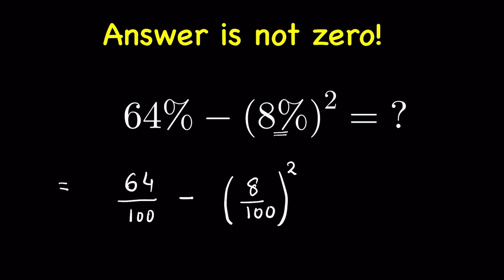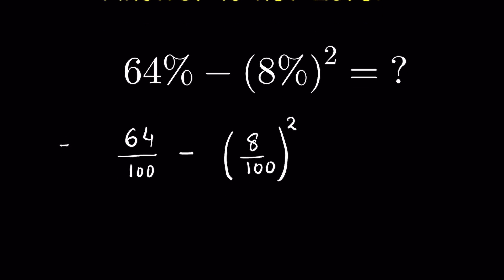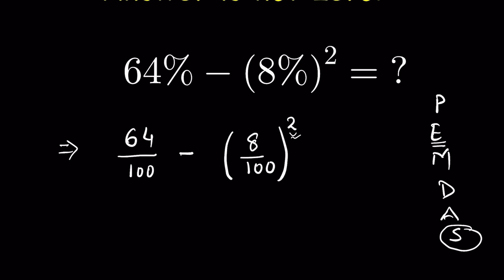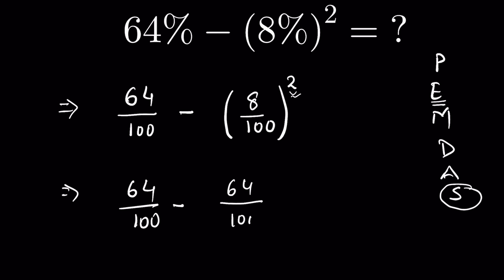First we must convert the percentage into a fraction to get a real number. Then, following order of operations, we solve parenthesis first, then exponents, then multiplication and division, then addition and subtraction. There is no parenthesis here, but we have an exponent, and subtraction comes last. So before subtracting, we solve the exponent: 8 upon 100 squared equals 64 upon 10,000.